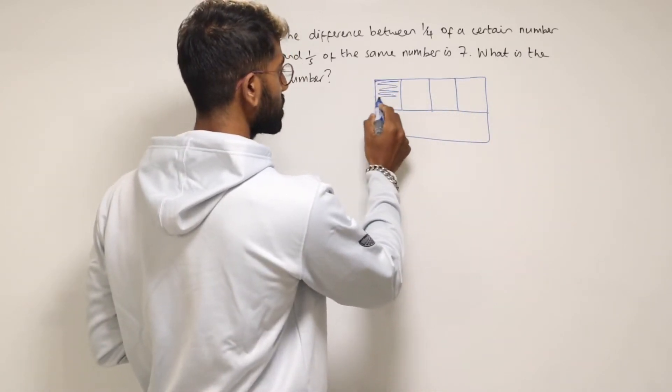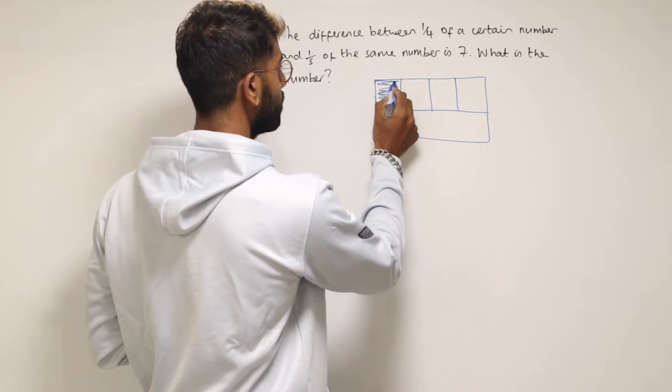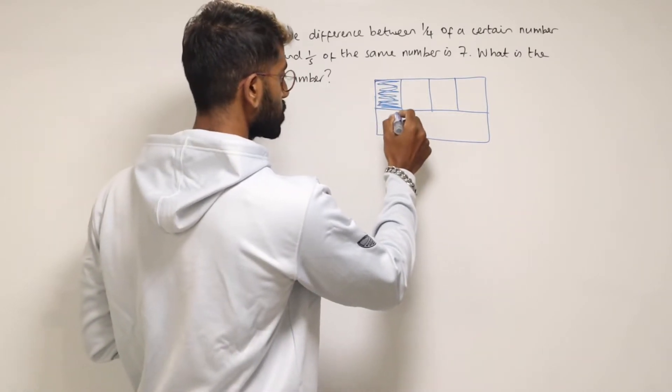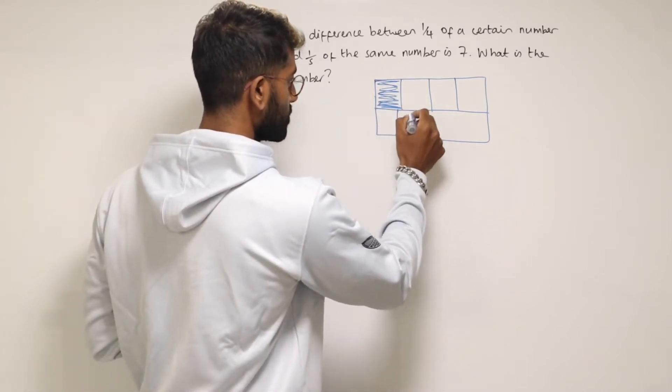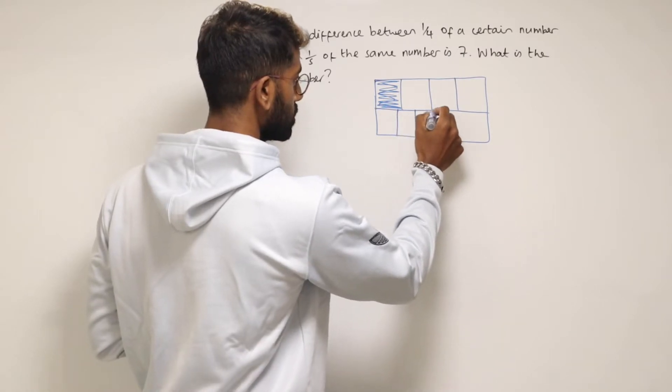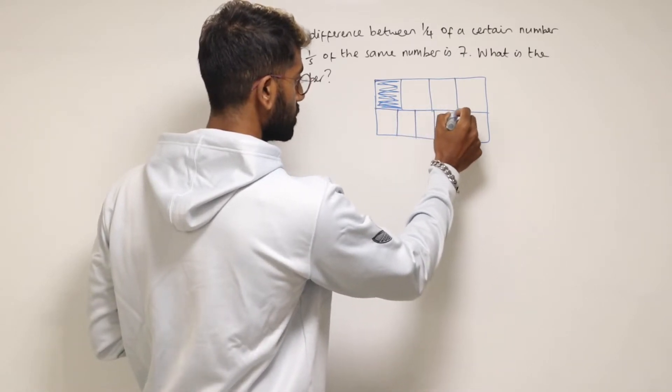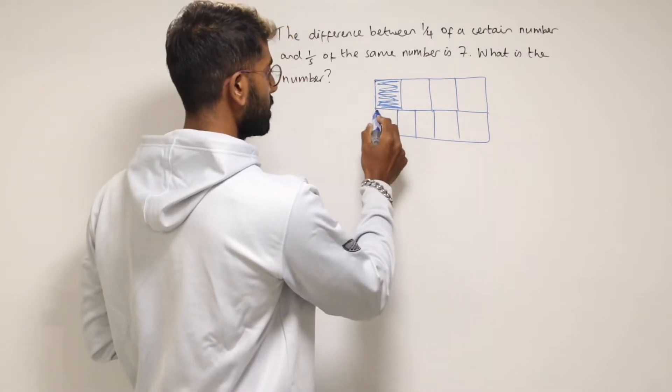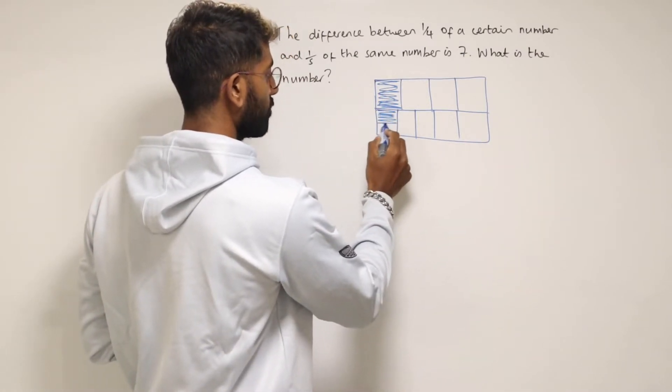So this here would represent a quarter of my number and a fifth. So we should also split this into fifths. One, two, three, four. So you've got fifths here and this would represent one fifth.